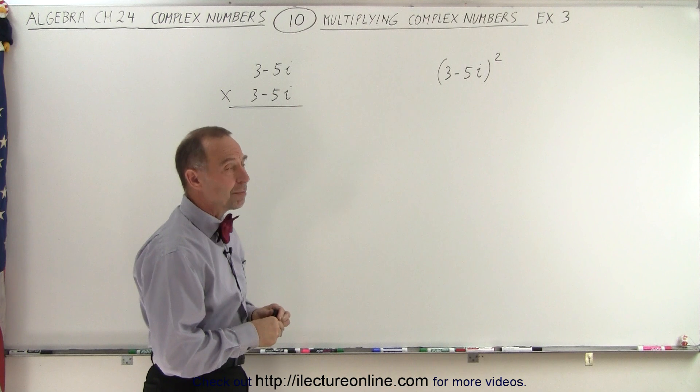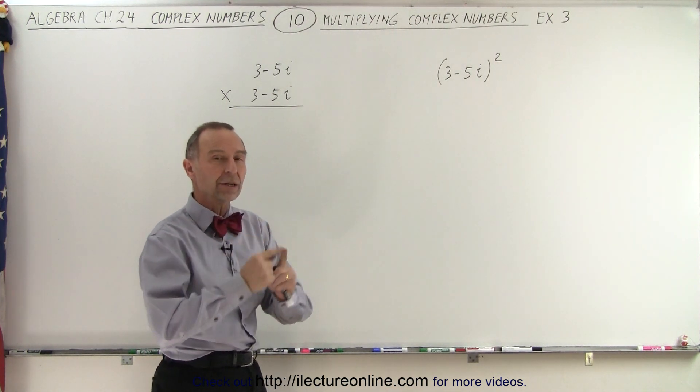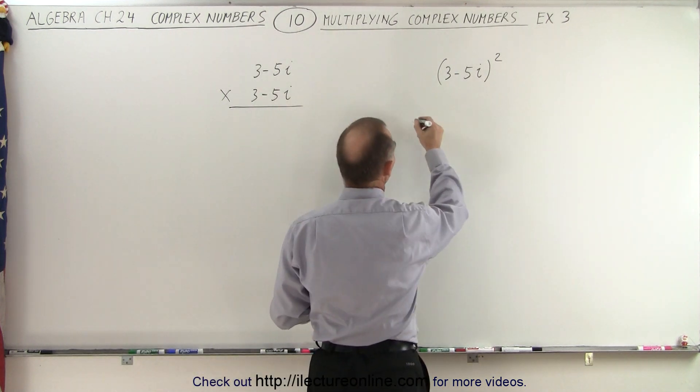When we see something like this, that means we're going to take the first term squared plus the last term squared plus twice the product of the two. So essentially, it becomes as follows.